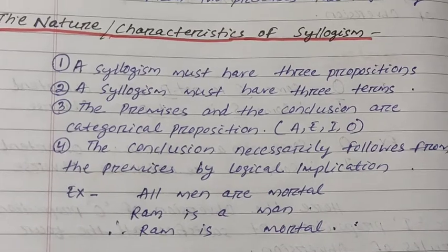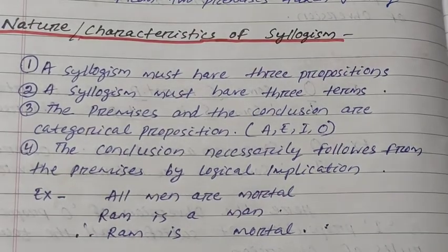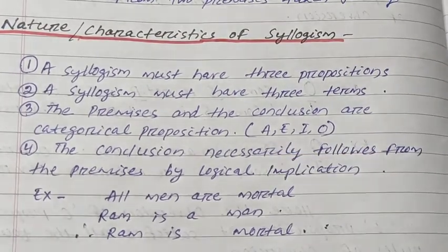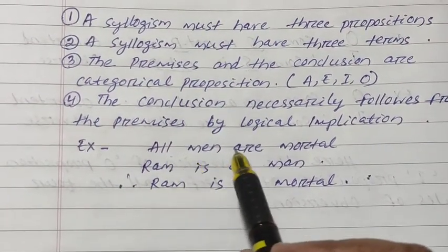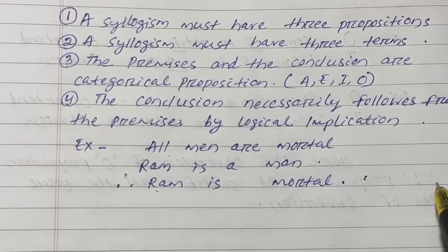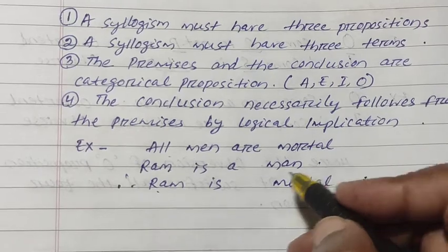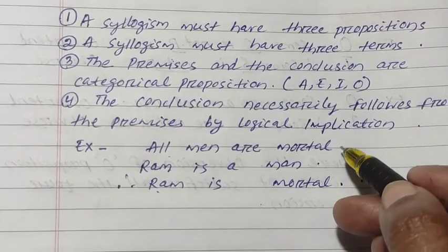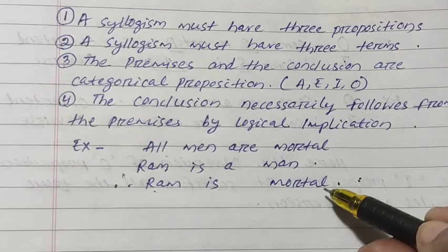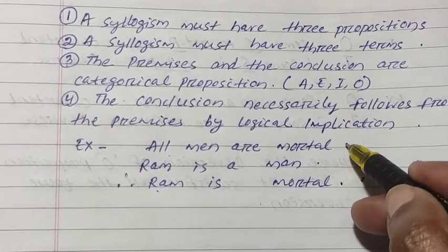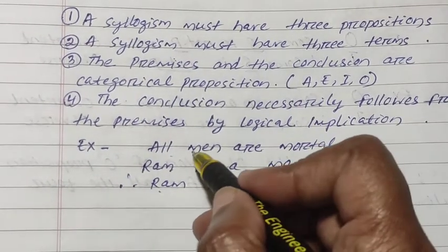The conclusion necessarily follows from the premises by logical implication. For example: 'All men are mortal, Ram is a man, therefore Ram is mortal.' Here, 'All men are mortal' is an A proposition — universal to particular — making it a deductive inference. It is also a mediate inference because we use two premises and a conclusion, giving us three propositions.